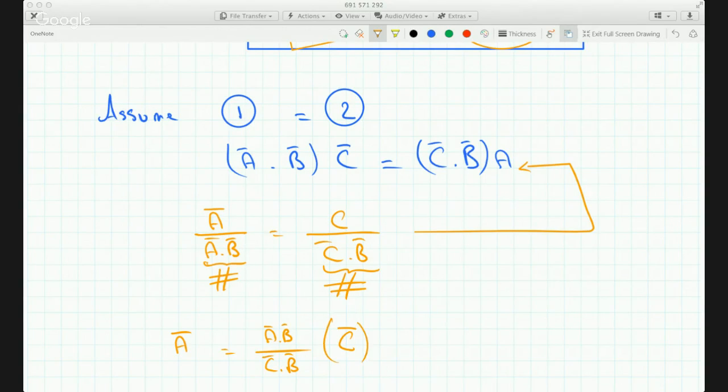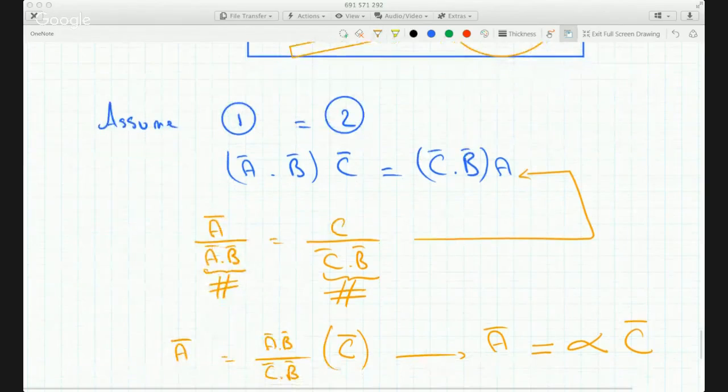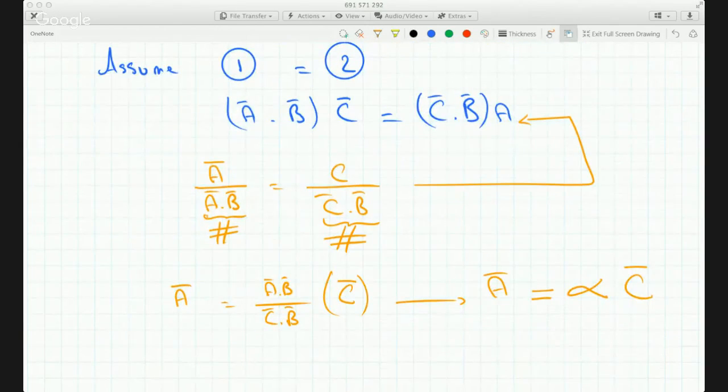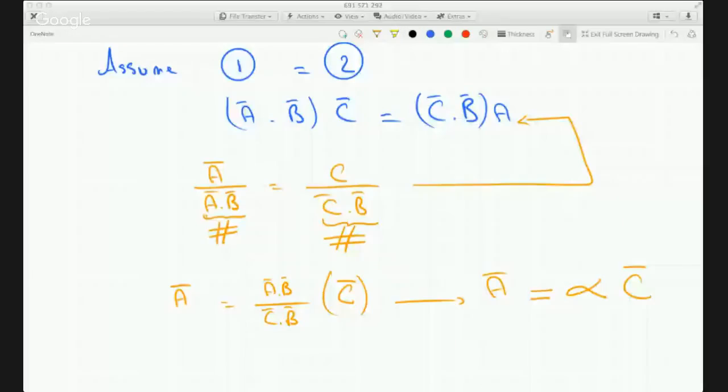So, what this is telling you is that vector A is equal to, is a scalar multiple of vector C. If vector A is a scalar multiple of vector C, that takes care of the question, doesn't it?